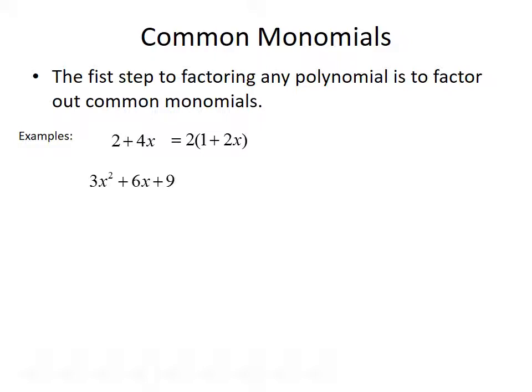Next we want to look at the polynomial 3x squared plus 6x plus 9. Can you see a common term that can be factored out? We could take a 3 out of each of the terms, so we could rewrite it as 3 times x squared plus 2x plus 3. Finally, we have x cubed plus x. We could factor x out of each of these terms and rewrite it as x times x squared plus 1.